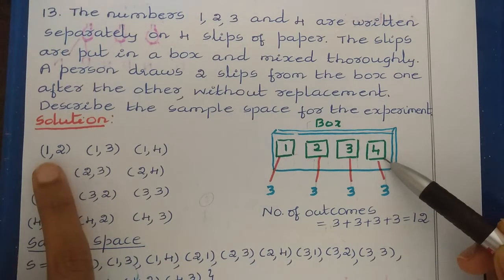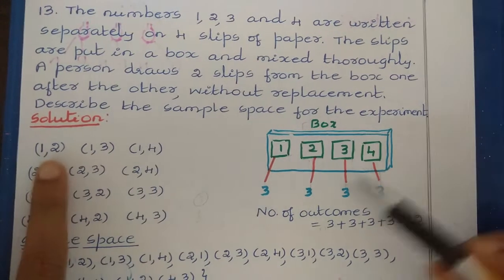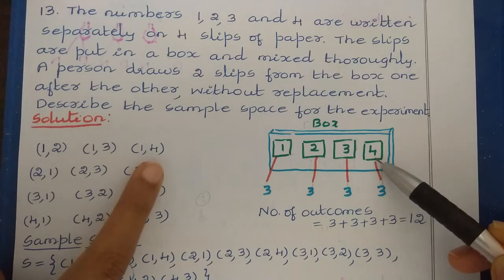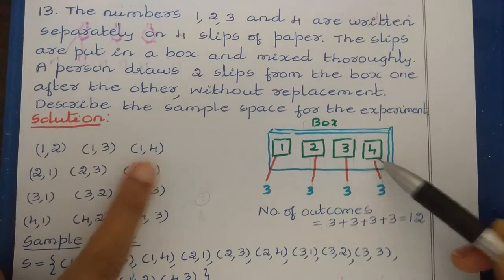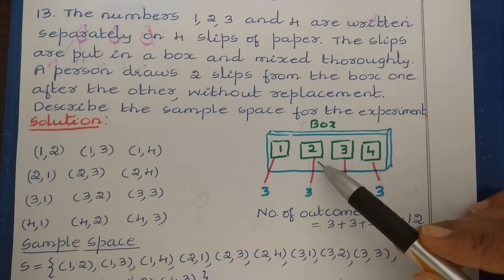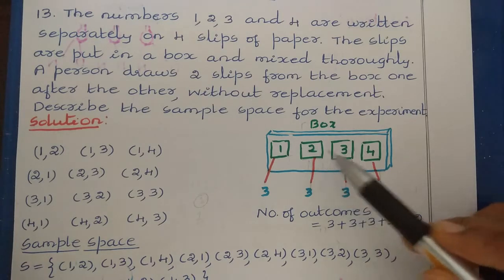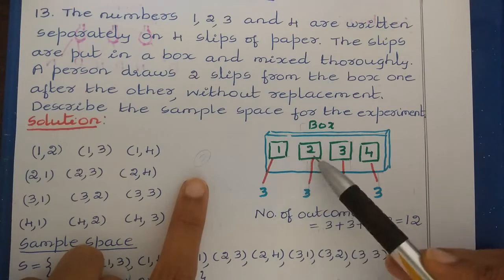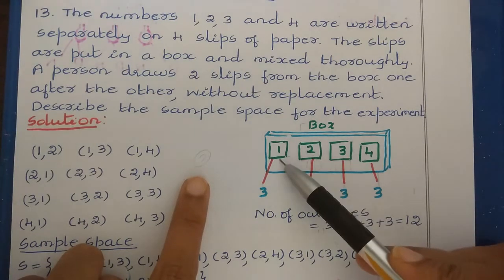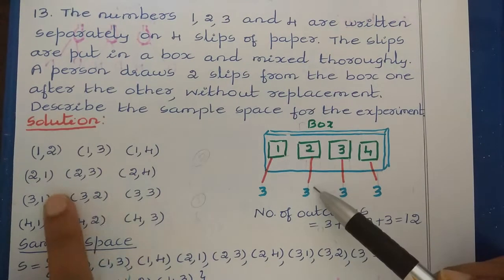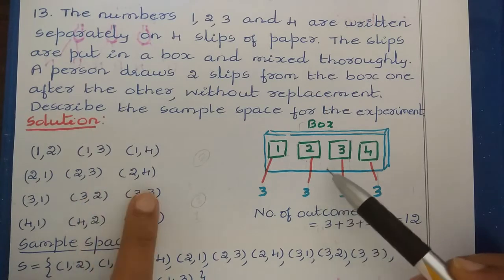So with 1, we can have 3 possibilities: (1,2), (1,3), or (1,4). Then if the person takes 2 first, the second number can be either 1, 3, or 4. So we get (2,1), (2,3), (2,4).